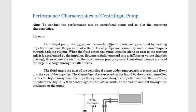Rotodynamic machines can be of two types depending on the direction of energy transfer. A turbine is a rotodynamic machine whose working principle is the reverse of the centrifugal pump. In a turbine, energy flows in the opposite direction — from mechanical energy to electrical energy — where we get mechanical work from the turbine and that work is used to produce electricity.